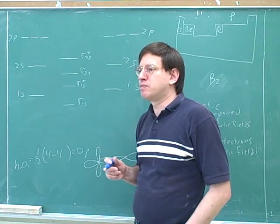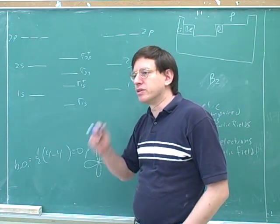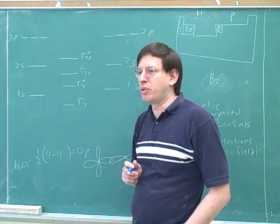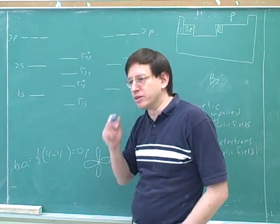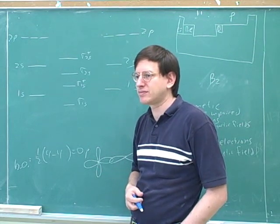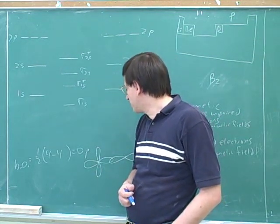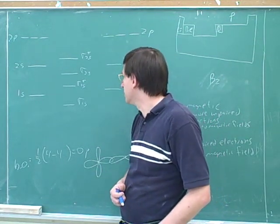A p orbital on an atom is perpendicular to all the other orbitals on that atom. This is an important point about p orbitals. A p orbital on an atom is always perpendicular to all the other orbitals on that same atom.